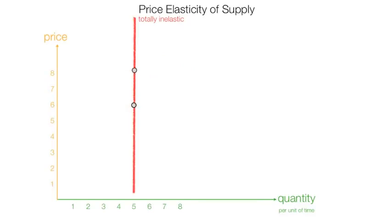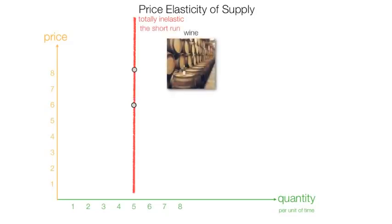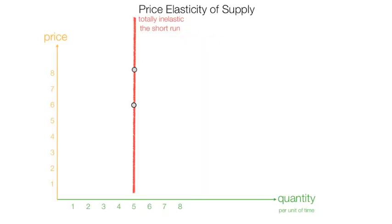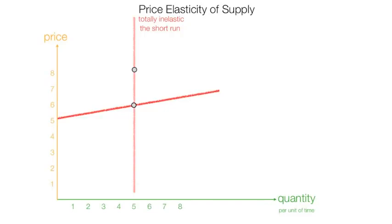Most supply curves are inelastic in the short run, or sometimes can be totally inelastic in the short run. From a wine perspective, supply of wine is totally inelastic in the short run. Even if price goes up, it is hard to produce more wine in the short run. It takes time to plant more vines, to grow those vines. So eventually supply begins to flatten out — supply becomes more elastic as time passes, because you can plant more vines and respond to increases in price. Short run inelastic, long run more elastic.